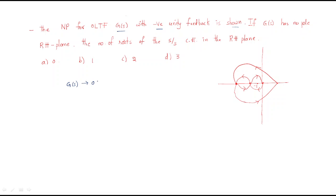Since G(s) is the open-loop transfer function and it has no poles in the RHP, the P value is zero. The question asks for the number of roots of the system's characteristic equation in the RHP, which means we need to find the closed-loop system poles.